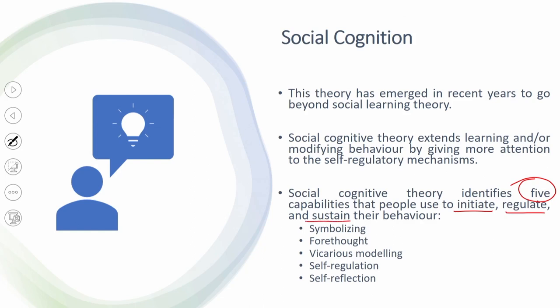The different capabilities are: symbolizing — you tend to symbolize with respect to some individuals and behavioural representations; forethought; and vicarious modelling. Vicarious modelling is when you are actually trying to model a particular person, usually somebody who is more related or similar to you. In vicarious modelling, if I want to be a better cricketer, I can observe Virat Kohli or Sachin Tendulkar and observe how they play each shot and how bowlers bowl.